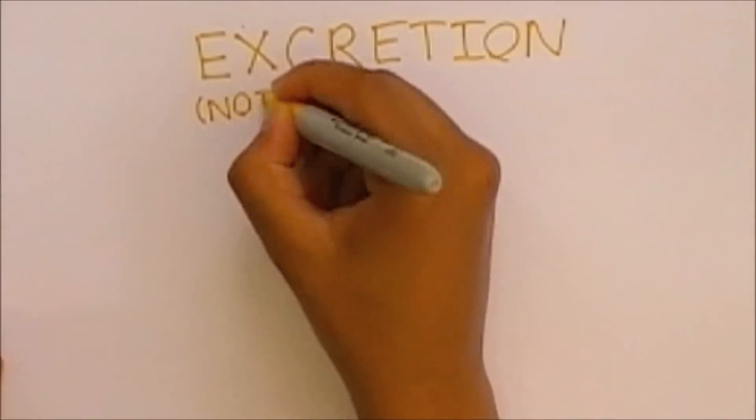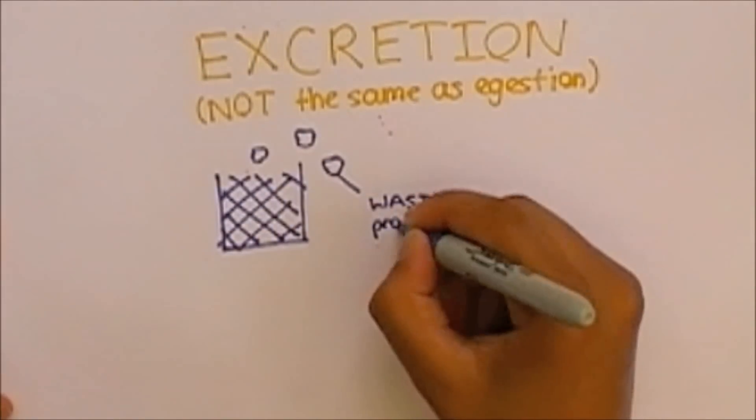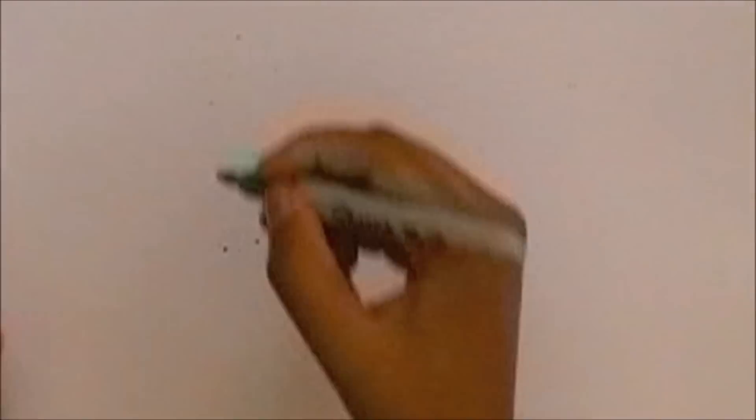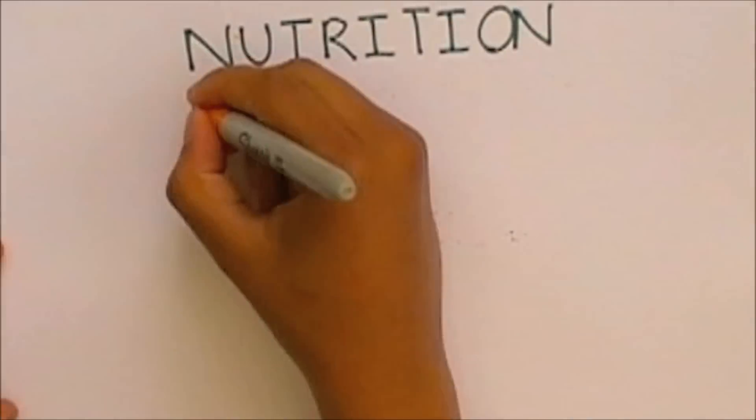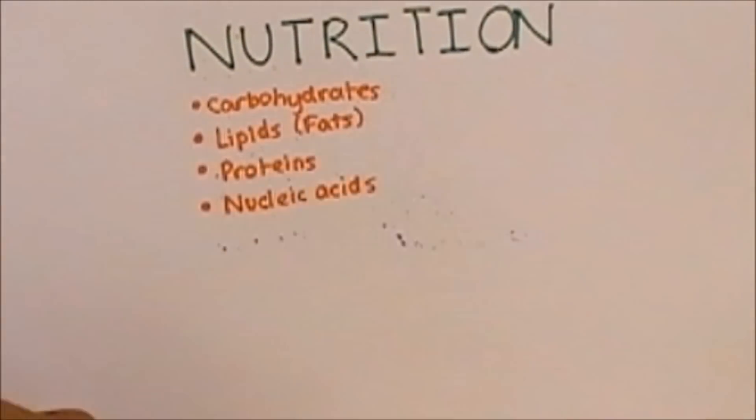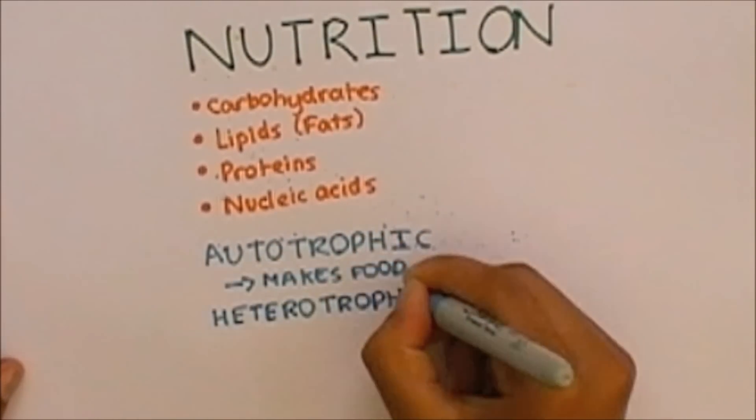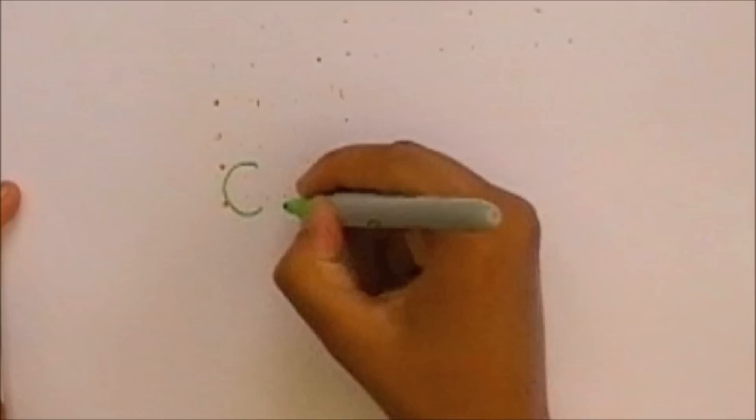Excretion is the removal of the toxic waste products of chemical reactions taking place in cells, also known as metabolism. All organisms need nutrition in the form of carbohydrates, lipids, proteins and nucleic acids which are all organic molecules. Organisms can either be autotrophic and make their own food or heterotrophic and find food from other sources.